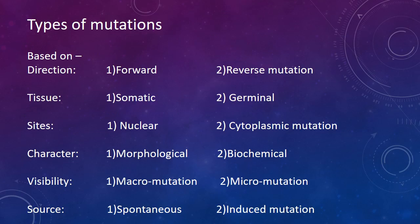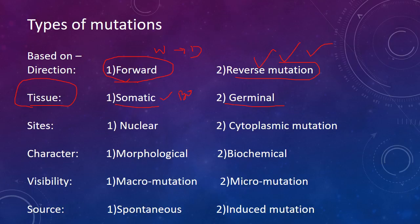The overall types of mutations: based on direction, there is forward mutation and reverse mutation. When wild plants grow into domestic plants it is called forward mutation; bringing back wild forms from domestic forms is reverse mutation. Based on tissue level, there are somatic and germinal mutations. Somatic means body cell — mutations may occur at leaves, stem, roots, etc.